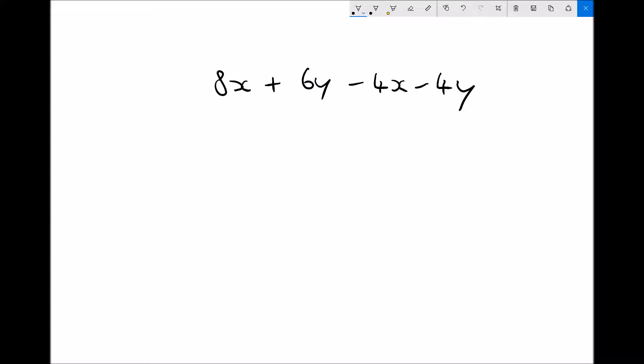Well the first thing we would do is collect the x's together. So we've got 8x minus 4x. Well 8x minus 4x is just 4x. We would do the same with the y's. So we've got 6y minus 4y. Well 6 minus 4 is 2, so we would have plus 2y.